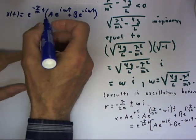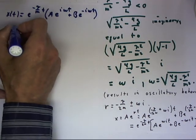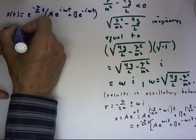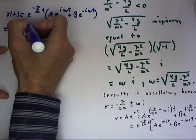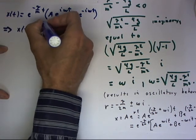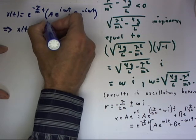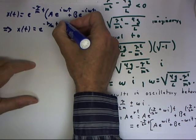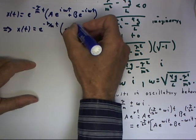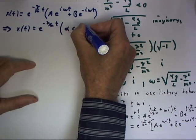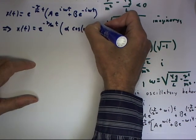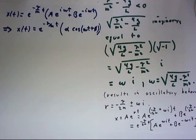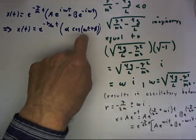I'm going to wave my hands a little bit because we've so recently done this. This implies a real behavior equal e to the negative gamma over m times t multiplied by an alpha cosine of omega t plus phi, using this notation similar to what I did before.